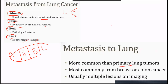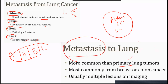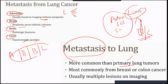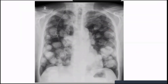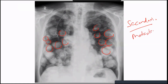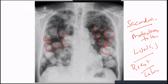Metastasis to the lung is more common than primary lung tumors. The most common sources are breast and colon cancer — MCQ. On chest X-ray or CT, you see multiple coin-shaped lesions — these are secondaries (metastases to the lung). If you see multiple coin lesions, think metastasis from a primary elsewhere, most commonly breast or colon.